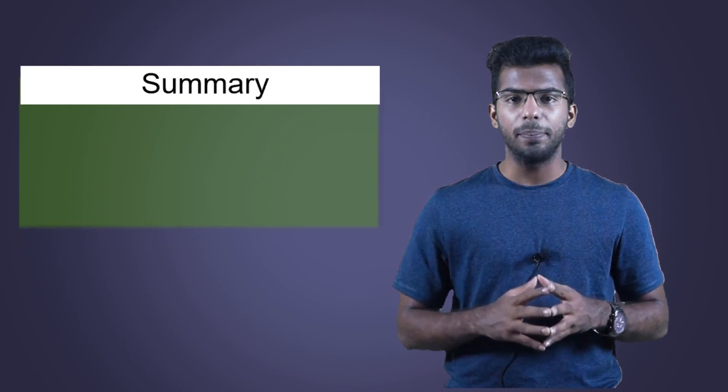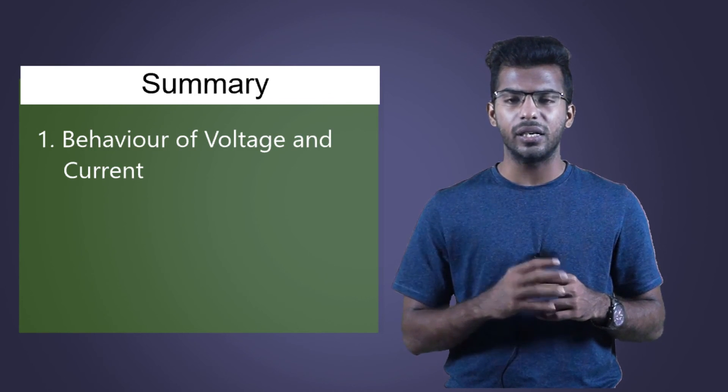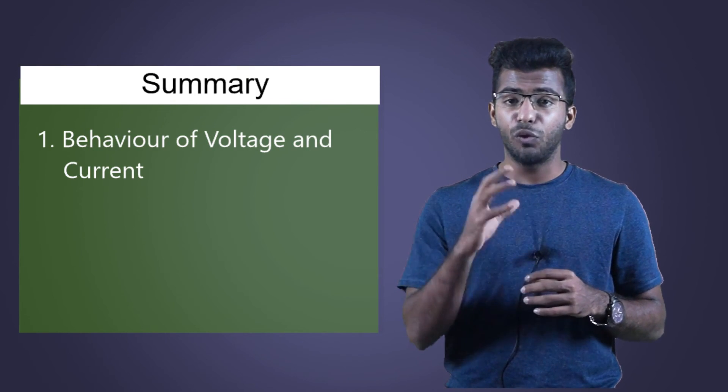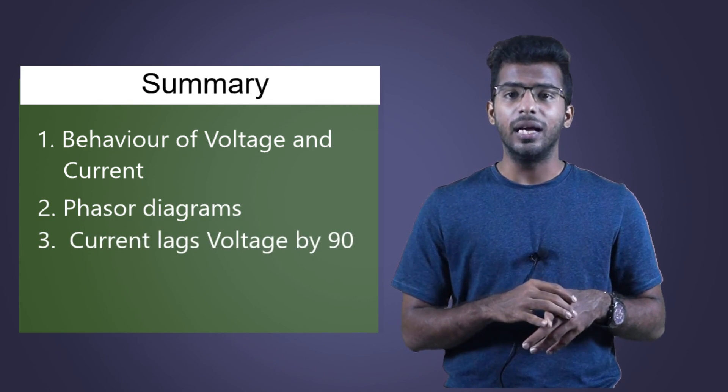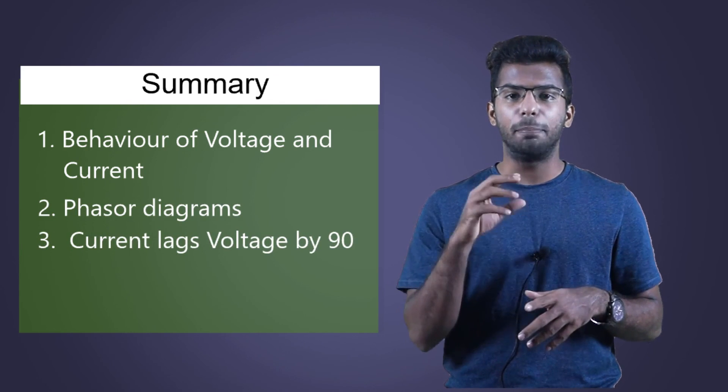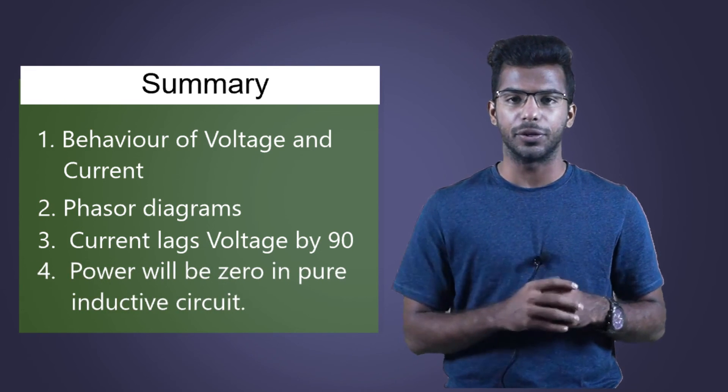This is all about AC circuits with pure inductance. To sum up, in this video, we learnt behavior of voltage and current, phasor diagrams, we also learnt that the current lags voltage by 90 degrees and then we came to know that the power absorbed will be 0 in pure inductive circuit. In the next video, we will look at AC circuits with pure capacitance.